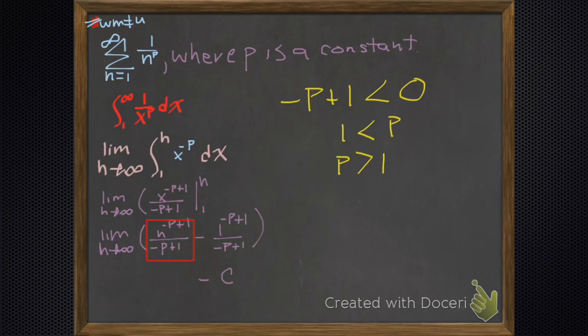Can p be 1? No, p can't be 1, because look at that denominator. Then that limit wouldn't exist, and if that limit doesn't exist, then that integral doesn't converge. If that integral doesn't converge, then the series diverges.